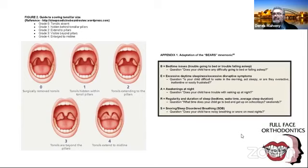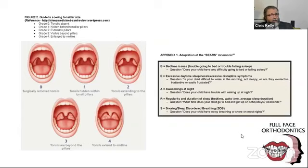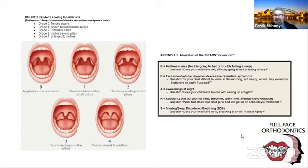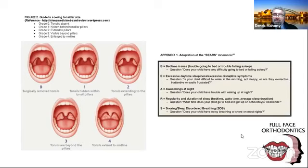If they did put a child under general anesthetic to do work and the child had OSA, they're going to have a hard time getting them out of that general — there's a disorganization that happens. Mallampati came up with his index based on that with more obese patients. R in BEARS stands for Regularity and duration of sleep — there are good YouTube videos that help you understand how to complete these forms. S is for Snoring — does your child have noisy breathing?